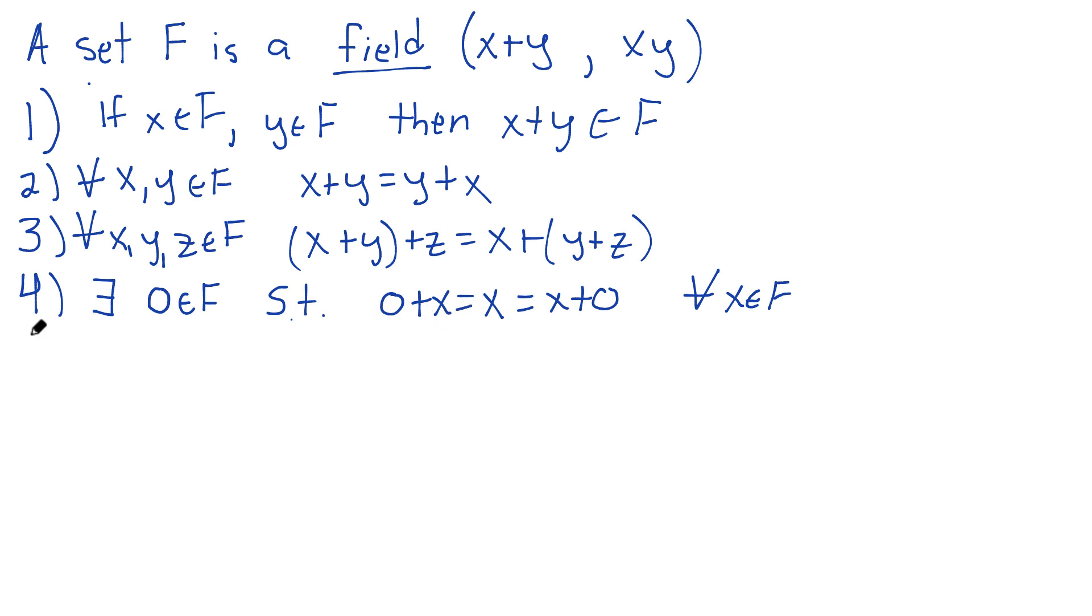Very nice. Number five, for all x in F, there exists another element. I'll call it minus x, which is also in F, such that x plus that minus x gives us zero. Or you could say minus x plus x is zero. Again, I don't really need this last one if I'm already assuming commutativity of addition. But this is our additive inverse.